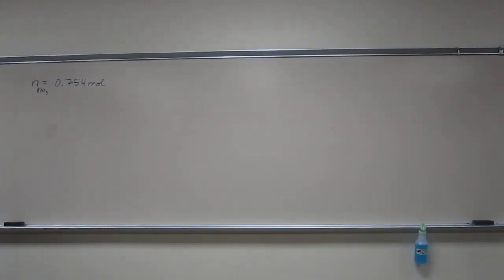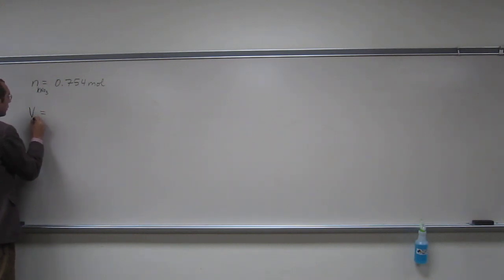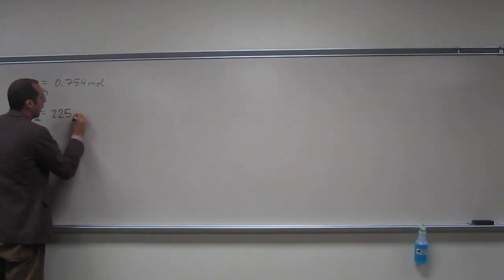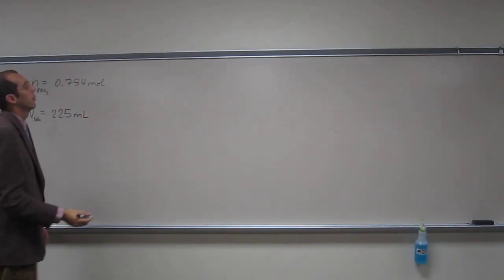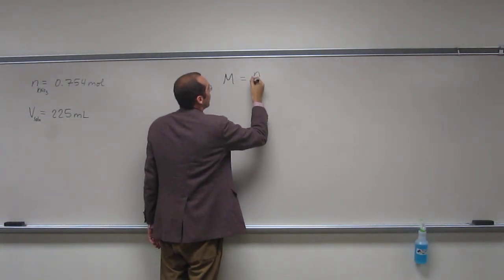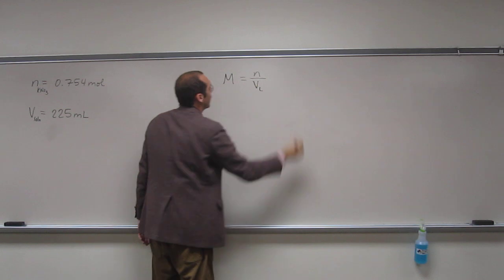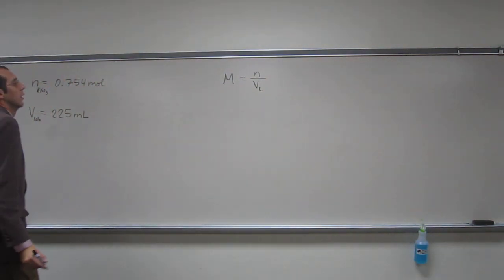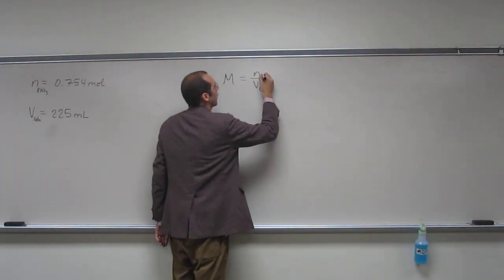And it tells us the volume of the solution is 225 milliliters. Well, remember, calculating molarity, that's the number of moles over the volume in liters of the solution. So this is the number of moles of the solute.